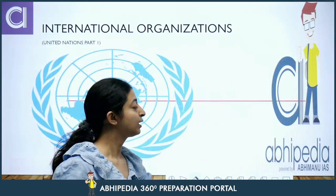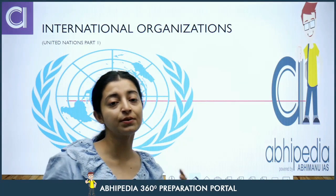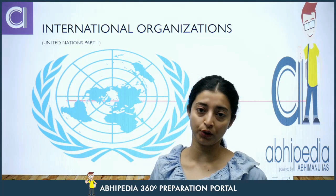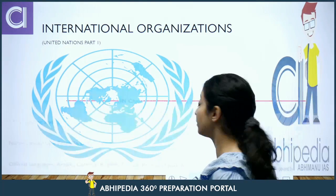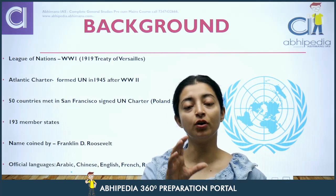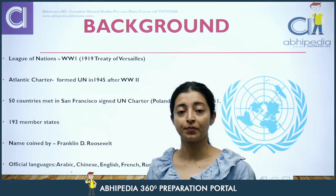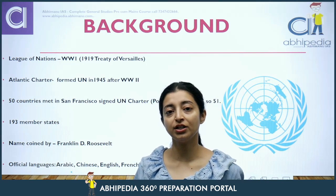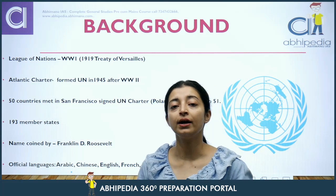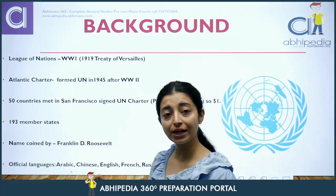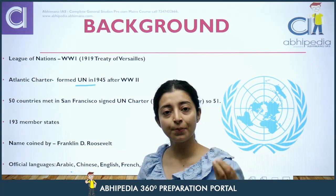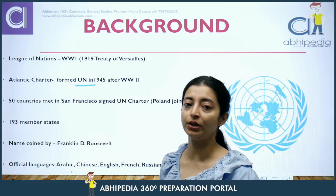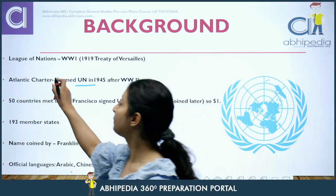United Nations — first of all, we will talk about the background. How did the United Nations form? It formed in the year 1945 as an aftermath of World War II. After World War II, there was so much destruction that a decision was taken: a new body should be formed which will maintain world peace and security.